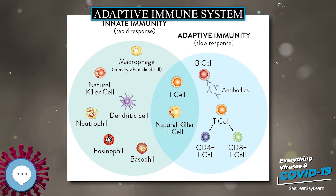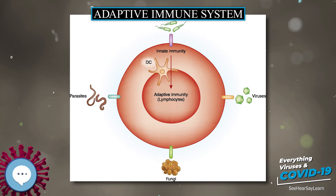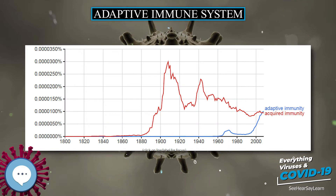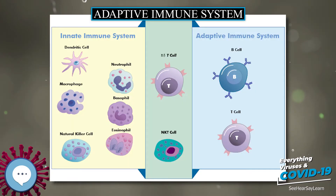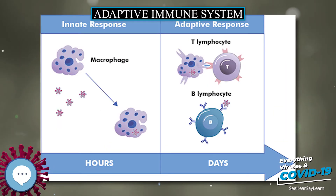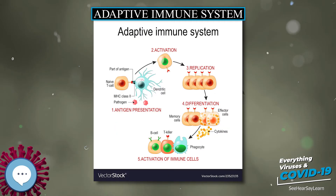In acquired immunity, pathogen-specific receptors are acquired during the lifetime of the organism, whereas in innate immunity pathogen-specific receptors are already encoded in the germline. This system is highly adaptable because of somatic hypermutation, a process of accelerated somatic mutations, VDJ recombination, and irreversible genetic recombination of antigen receptor gene segments.